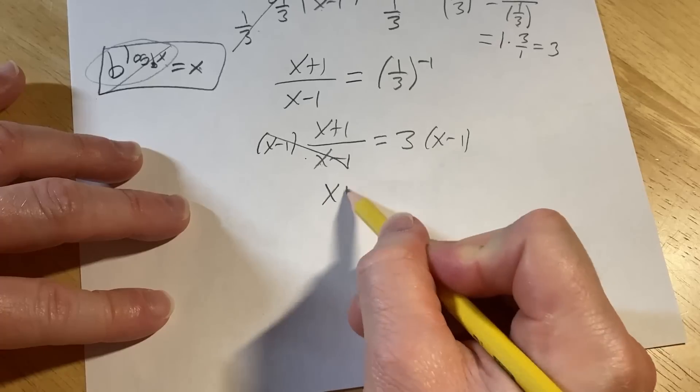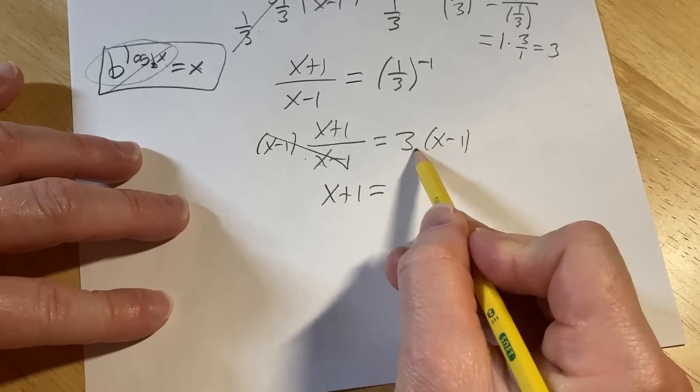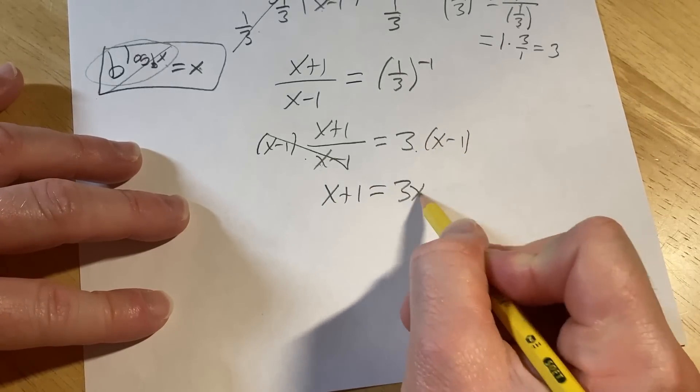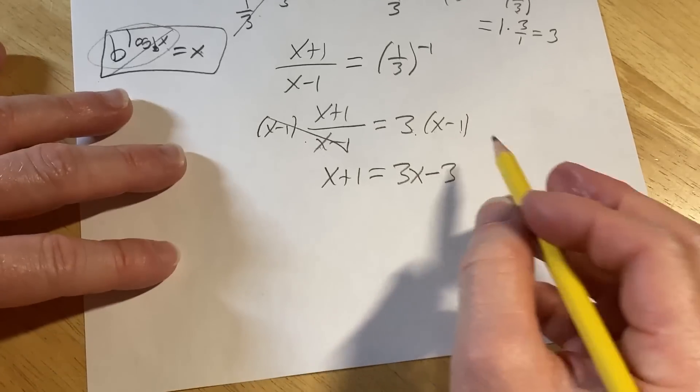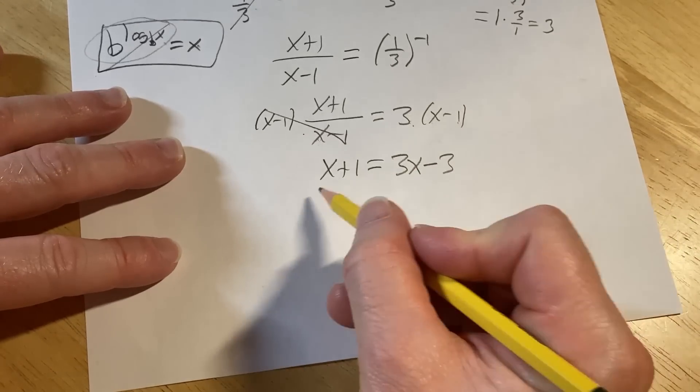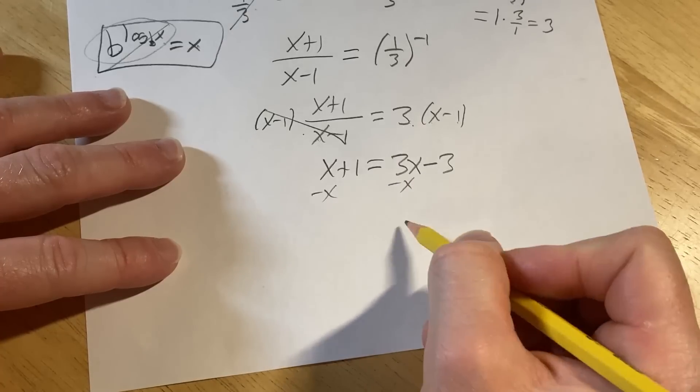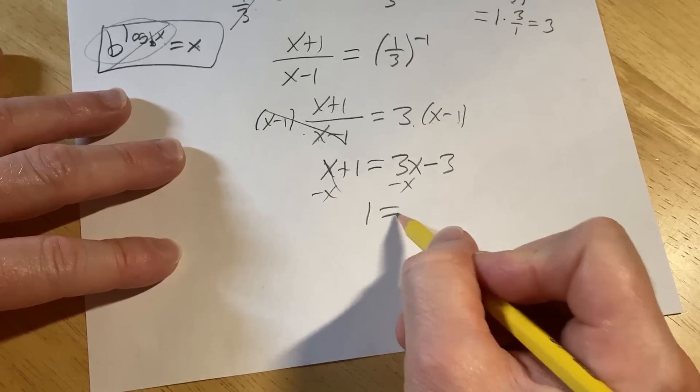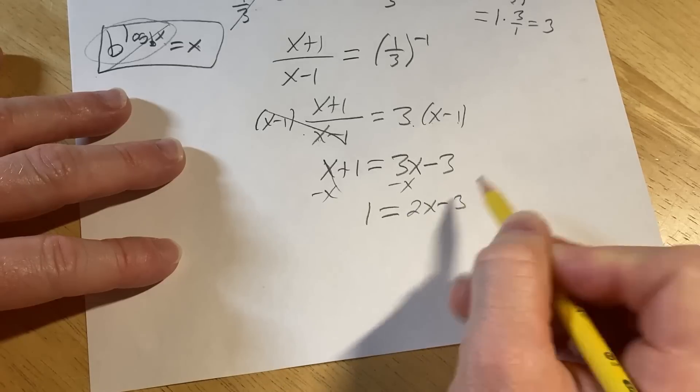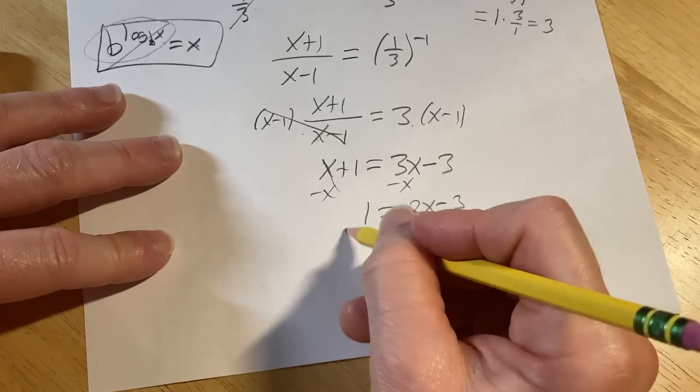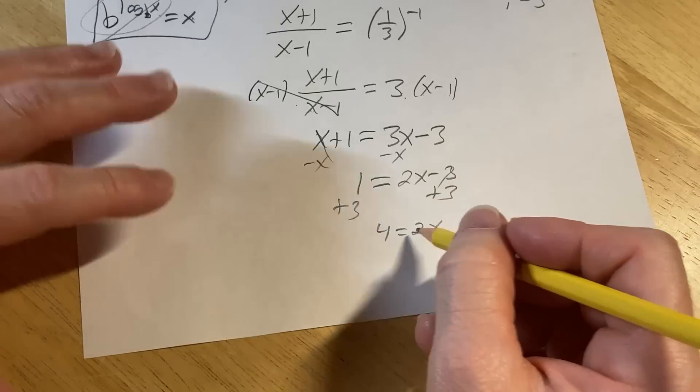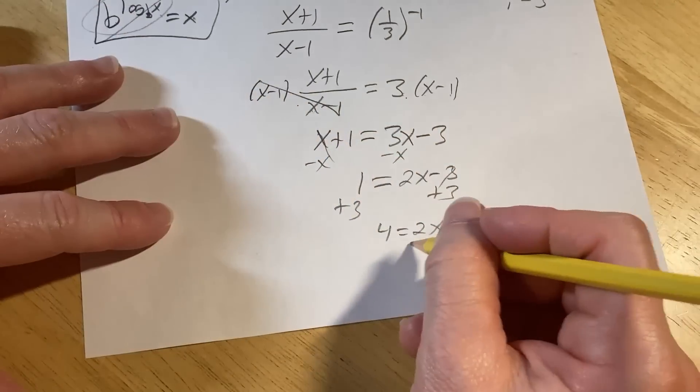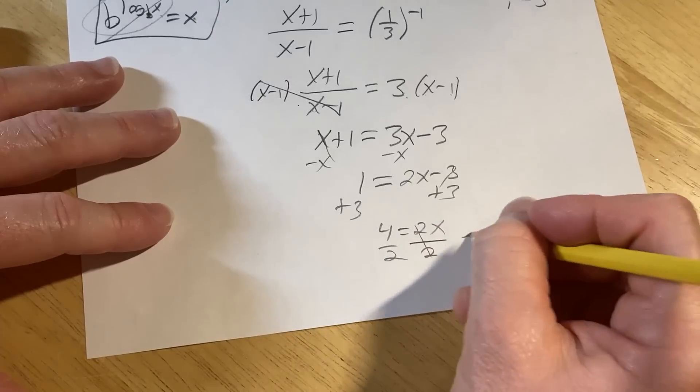So we have x plus one equals, distributed three here, three times x is three x, three times negative one is negative three. And we're looking for x. Let's just put all the x's on one side. So I'll subtract x, subtract x. So that's going to give us one equals two x minus three plus three plus three, gives us four equals two x. And then finally, to solve for x here, since it's being multiplied by two, we just divide by two. So x is two.